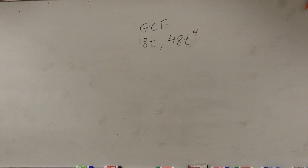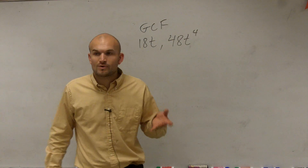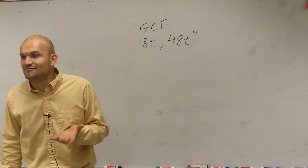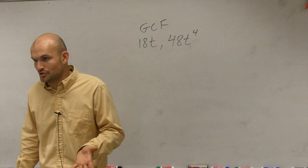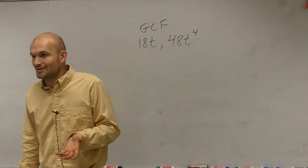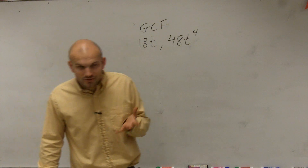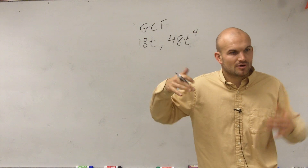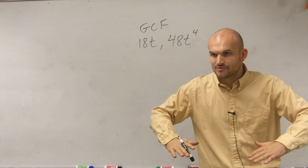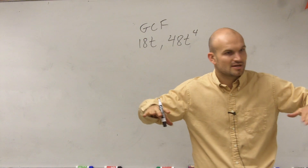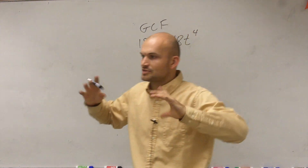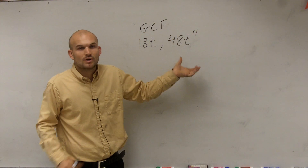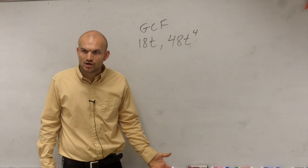Find the GCF. The GCF tells us what is the greatest common factor. Factors are numbers that divide into both of our terms. So what we did in the previous example was we factored down to prime factors — we took a number and factored it down to its prime factors. Now what we want to do is go back and see what is the largest number that divides into both of these terms.